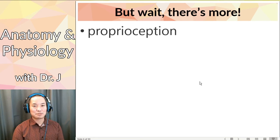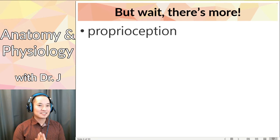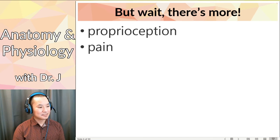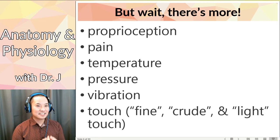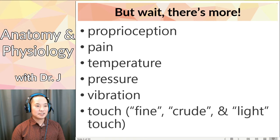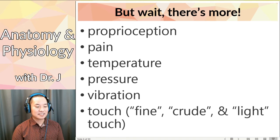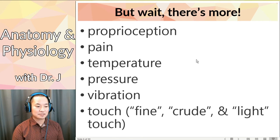There's more than five senses. There's proprioception, which is the sense of body position, as well as pain, temperature, pressure, and vibration. And touch is actually a very complex sense that can be broken down into different types. Fine touch means you can tell when a mosquito or fly lands on you - you know where to swat. Crude touch means you know something's touching you but not necessarily where it is. And light touch might be something brushing against you. There are different types of touch and different receptors for each.